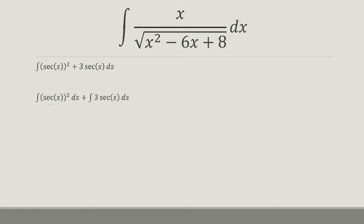The antiderivative of secant squared is tangent of s. And then the antiderivative of secant of s is ln secant of s plus tangent of s.